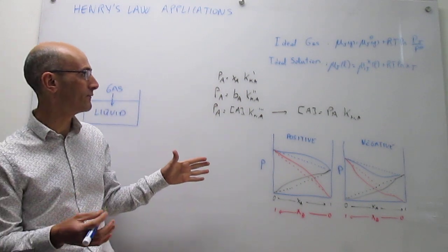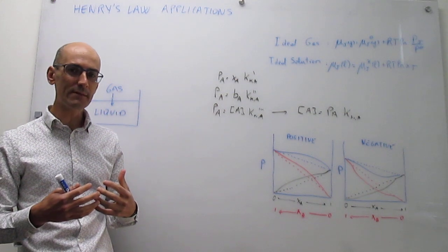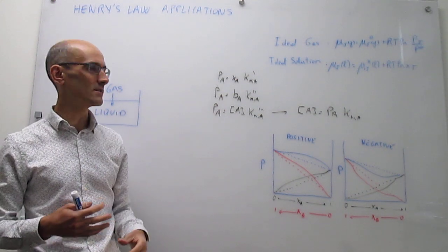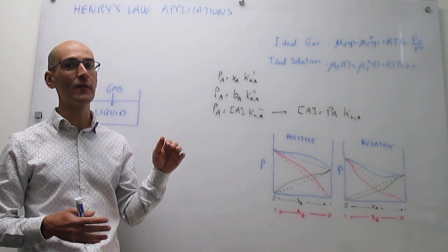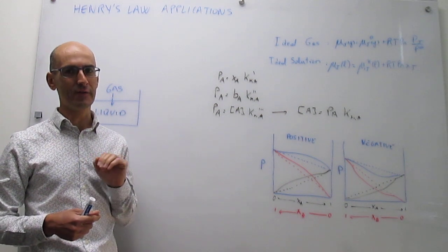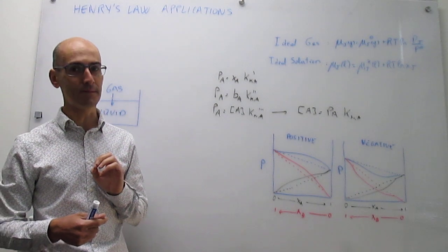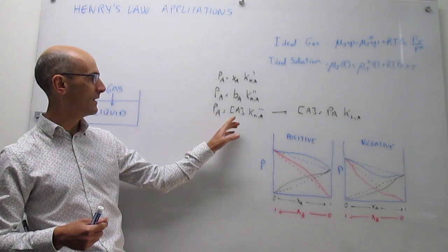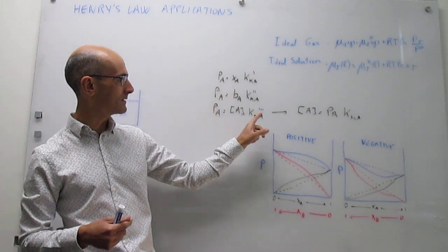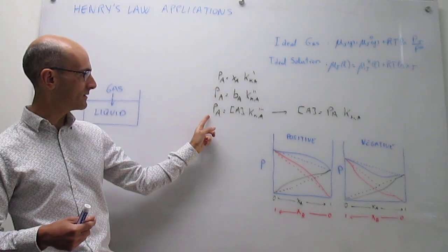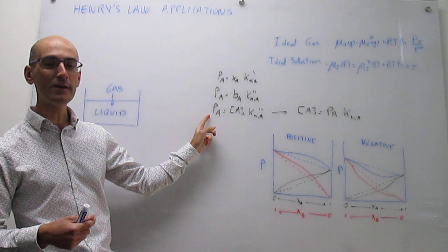So essentially, Henry's law is telling you the following: when you have something that is in minority in the solution, its concentration actually depends on the partial pressure of that minority component on top of the solution. This will be the concentration of that minority component in the solution, and that is the partial pressure of that component on top of the solution.